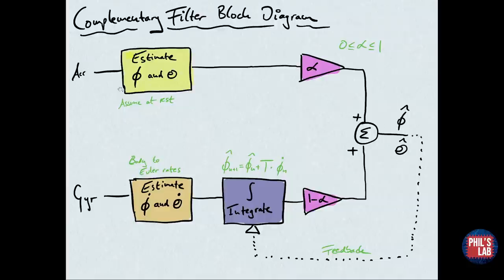Essentially, we take the accelerometer data. From that, we assume the system is at rest, just for simplicity, and then we try to estimate phi and theta, the roll and pitch angles, using the accelerometer values only. We then multiply by some constant called alpha, which is typically between zero and one.